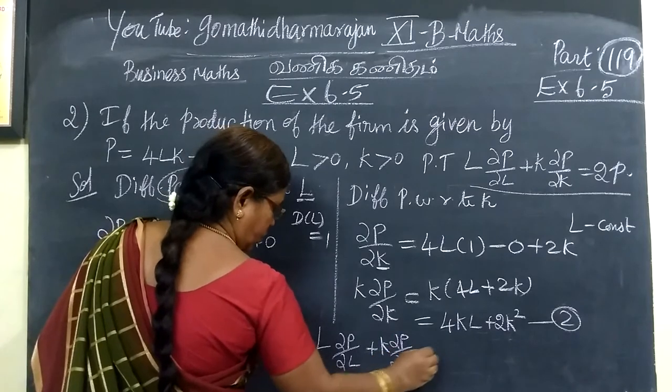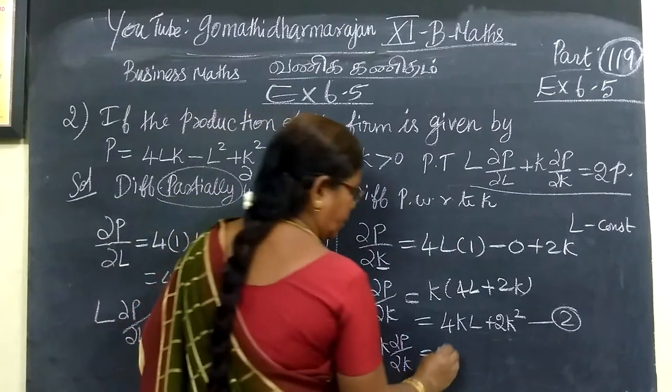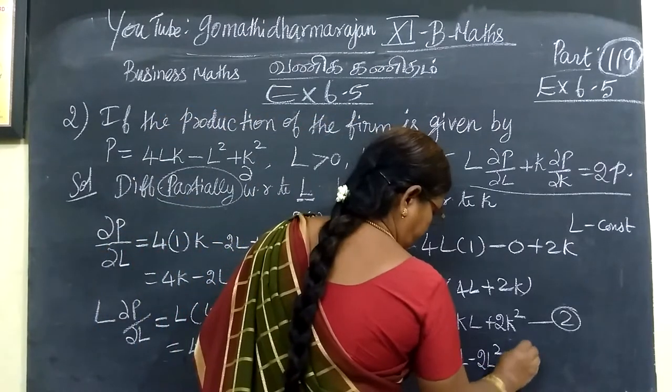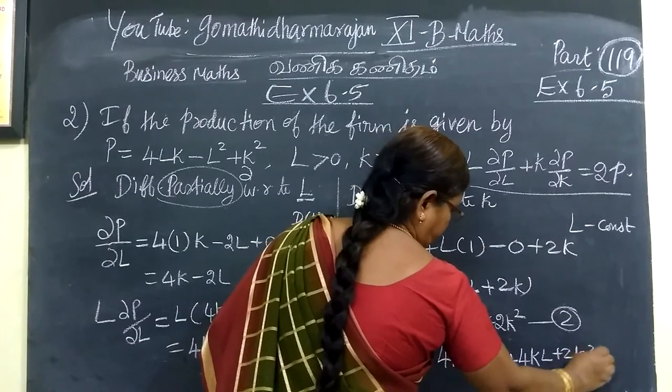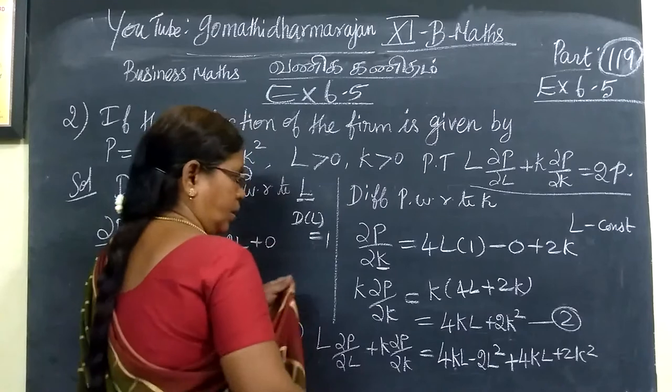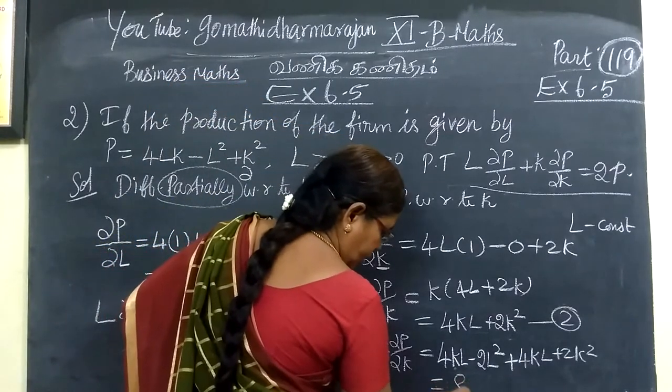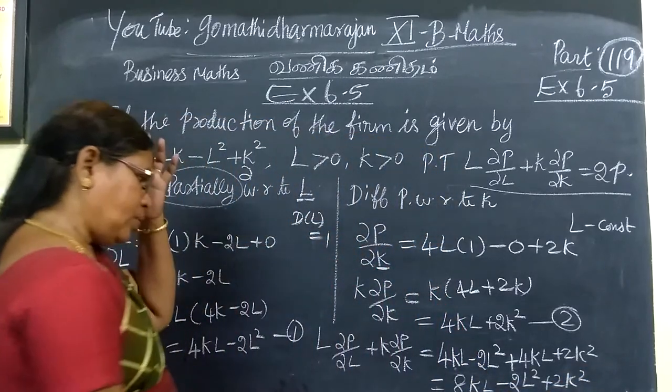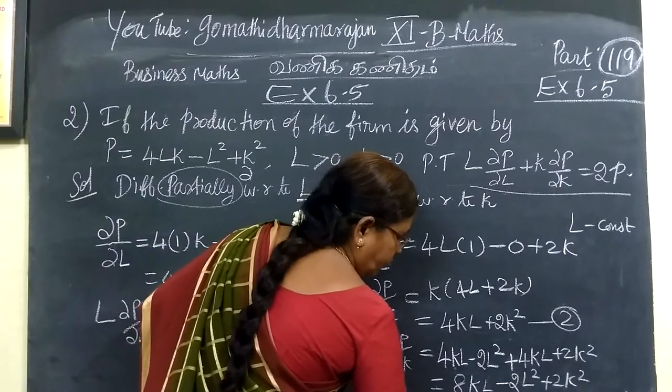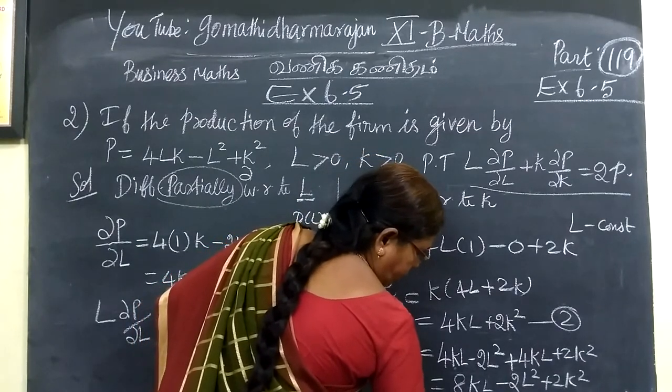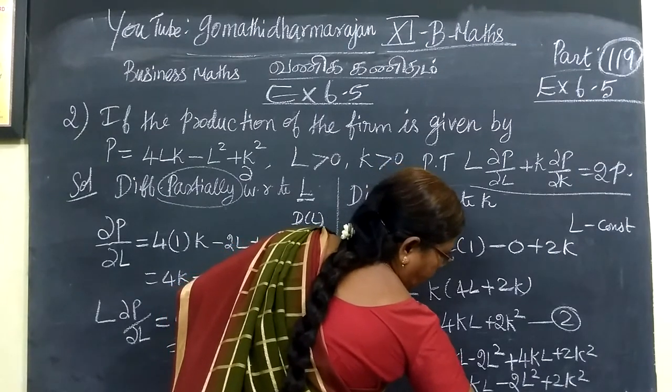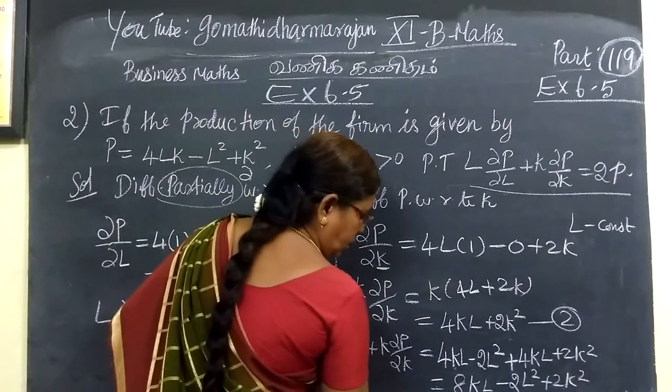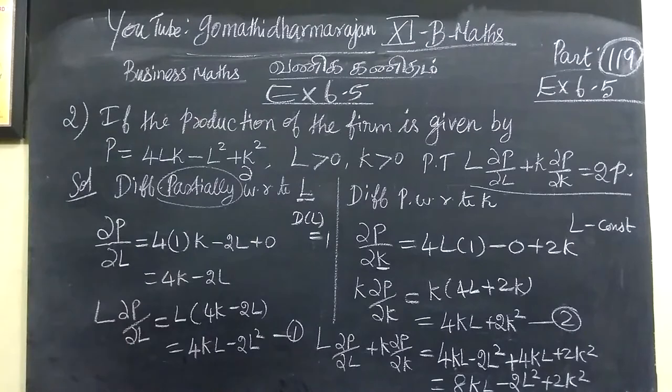Now we need L(∂P/∂L) plus K(∂P/∂K). That equals 4KL minus 2L square plus 4KL plus 2K square. So 4KL plus 4KL equals 8KL. Therefore 8KL minus 2L square plus 2K square. We can take 2 common: 2 times K square minus L square plus 4KL.